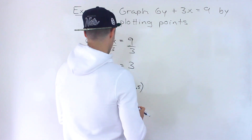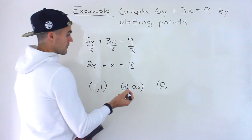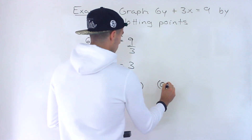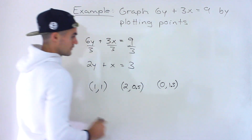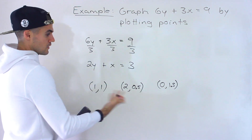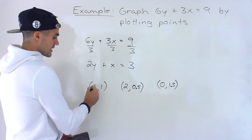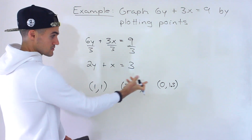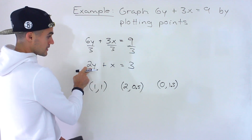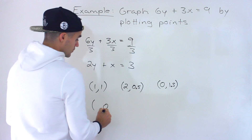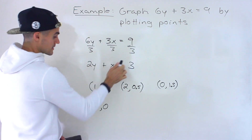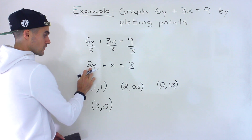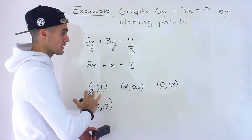We could pick another point — let's say x equals 0. We'd have 2y equals 3, divide both sides by 2, giving us y equals 1.5, so the point is (0, 1.5). This also gives you the y-intercept. You can also plug in values for y — if we plug in y equals 0, x equals 3, so (3, 0) is a point as well. You can plug in values for either variable and solve for the other.